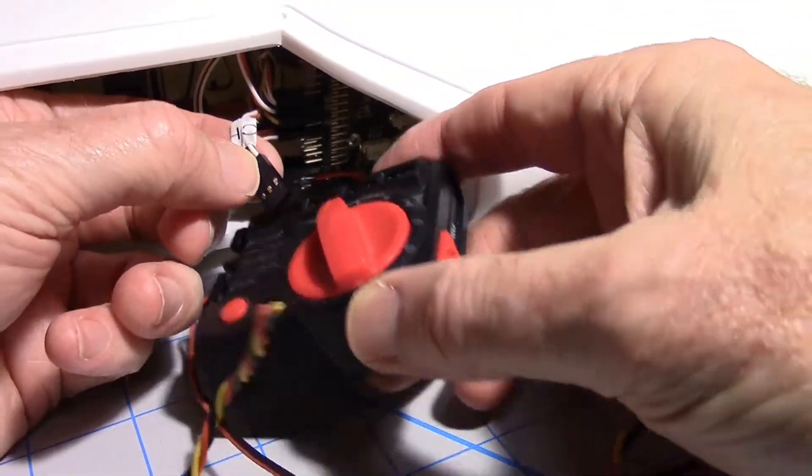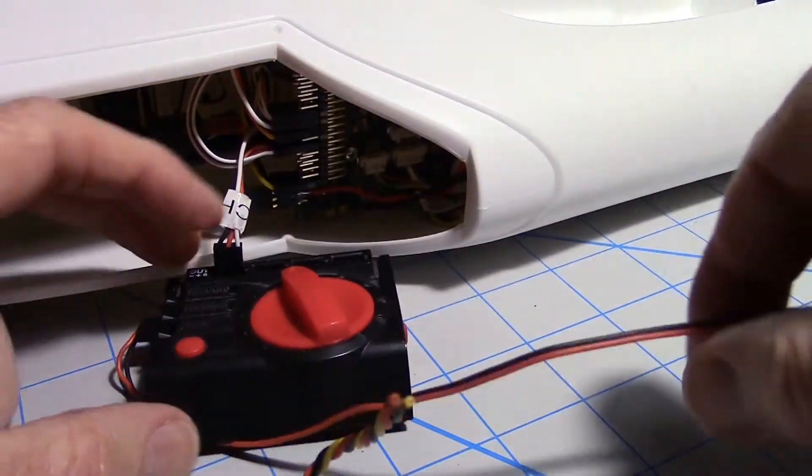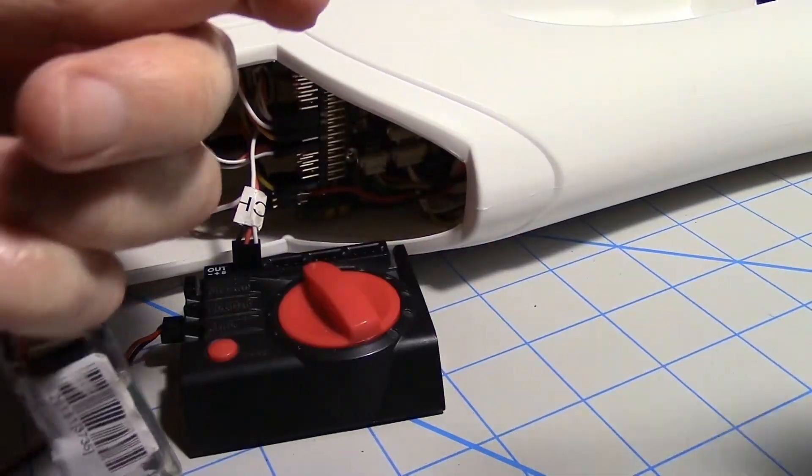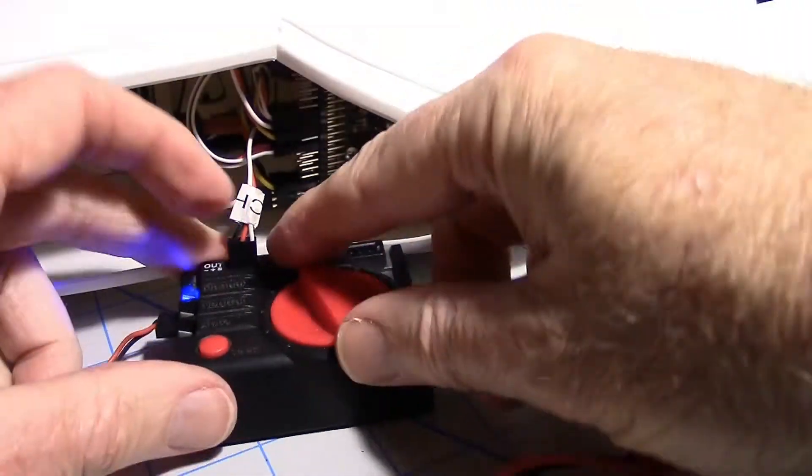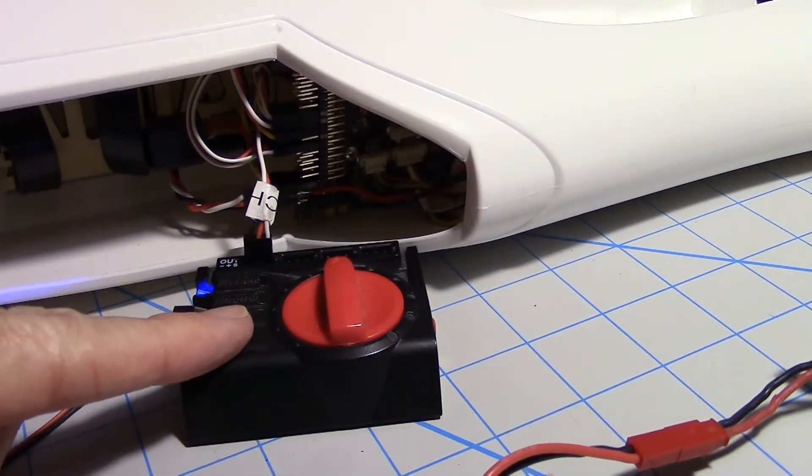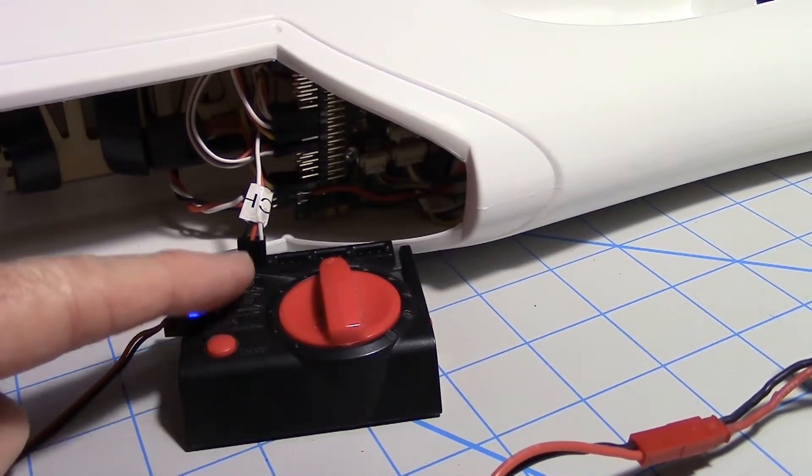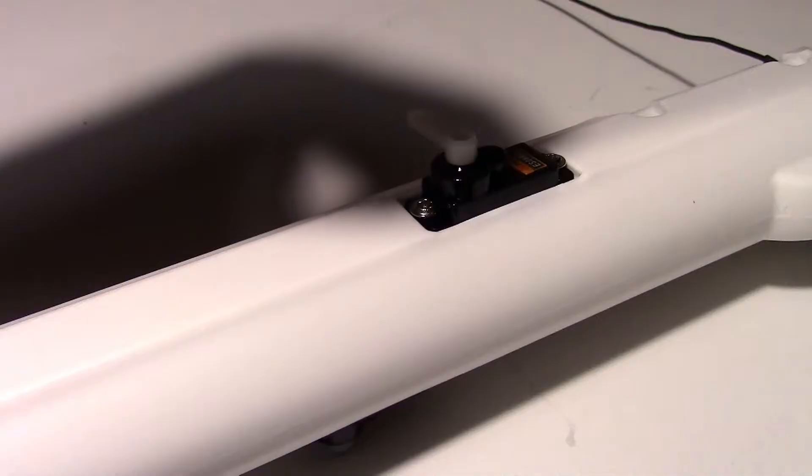We'll center it up. I just need to plug in a battery. Let's go to neutral. Now it's centered and we'll put the servo arm on it. Just putting in the servo screw.